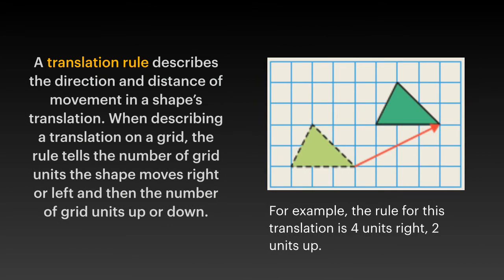A translation rule describes the direction and distance of movement in a shape's translation. When describing a translation on a grid, the rule tells the number of grid units the shape moves right or left and then the number of grid units up or down. For example, the rule for this translation is 4 units right, 2 units up.